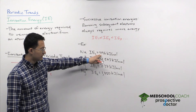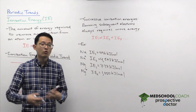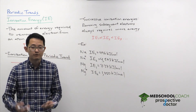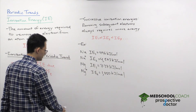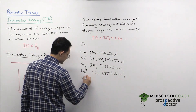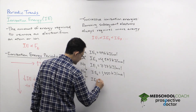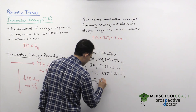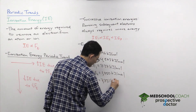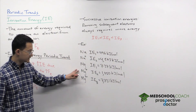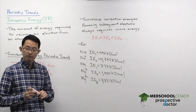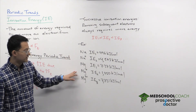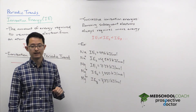One thing that stands out: for sodium, the ionization energy jumped from about 500 to about 4,500 kilojoules per mole — a jump of about 4,000. For magnesium, going from the first to the second ionization energy, it only went from 700 to 1,400 — a jump of about 700. However, the third ionization energy for magnesium, removing an electron from Mg²⁺, is 7,731 kilojoules per mole — showing a big jump between the second and third. We want to understand why.